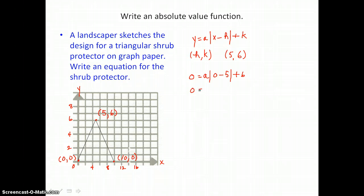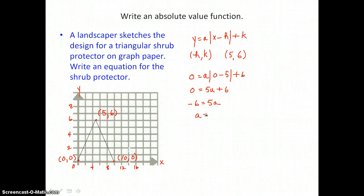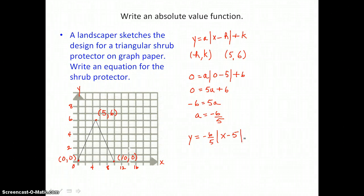On the right-hand side, 0 minus 5 inside the absolute value is negative 5, and the absolute value of negative 5 is 5, so this term becomes 5a. To solve for a, subtract 6 from both sides to get 5a alone: negative 6 equals 5a. Then divide both sides by 5, and we find that a equals negative six-fifths. Now I can write the full equation: y equals negative six-fifths times the absolute value of x minus 5, plus 6.